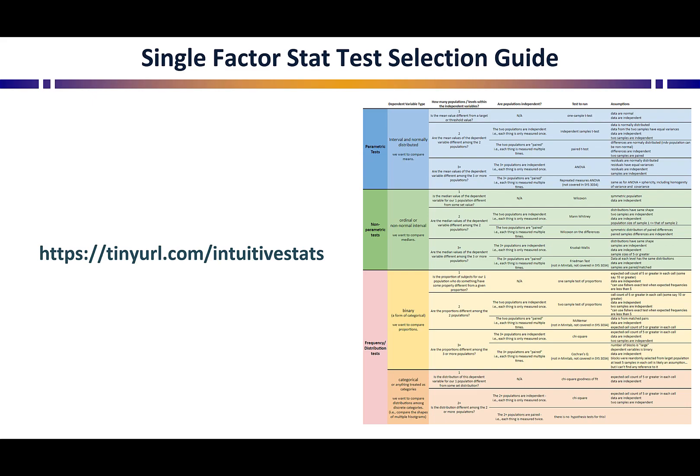We have a statistical test selection guide for single-factor statistics available at the URL shown. Today and in the next video on chi-square in Part 2, we're focused down here on frequency-dependent variables.